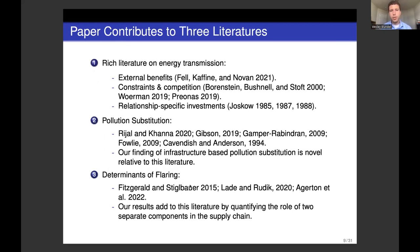These results contribute to three literatures. The first is the rich literature on energy transmission, which has primarily focused on electricity transmission. Our results also contribute to the literature on pollution substitution — our finding of infrastructure-based pollution substitution between flaring and methane is novel, as this literature has primarily focused on regulation-induced substitution, where firms substitute to polluting water if regulated for clean air. Here instead we have infrastructure-induced substitution. Finally, we contribute to a growing literature on the determinants of flaring, quantifying the role of transmission capacity and natural gas processing capacity.